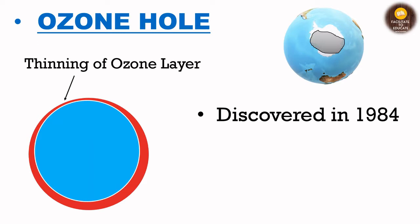Now we will talk about the ozone hole, which is the most misinterpreted and misunderstood term. We always think there is a literal hole in the ozone layer, but that is not true. The ozone hole is nothing but the thinning of the ozone layer. As you can see in the picture, considering the Earth's surface and the stratospheric ozone layer above it, the ozone layer is thinner in some areas than others — that thinning is what we call the ozone hole.